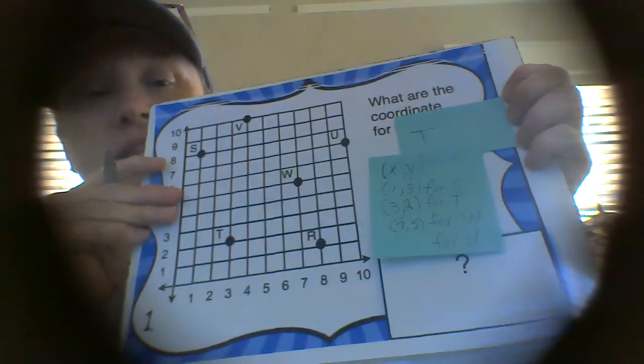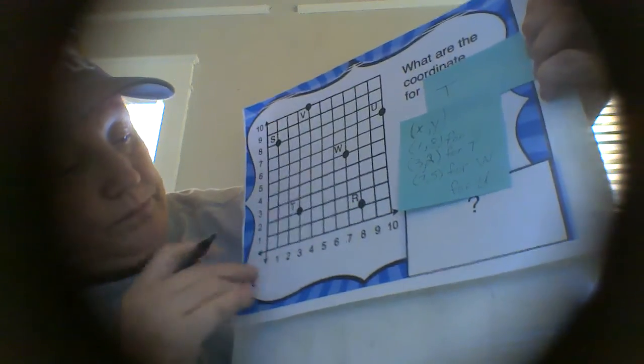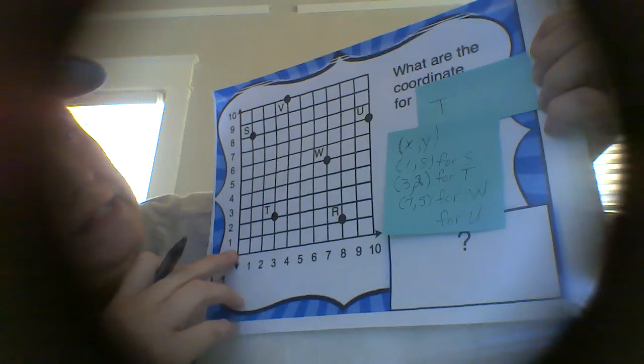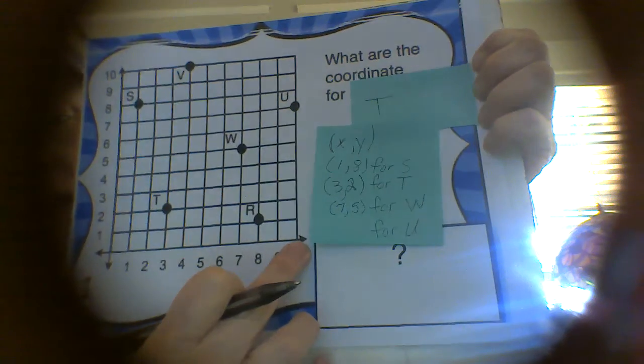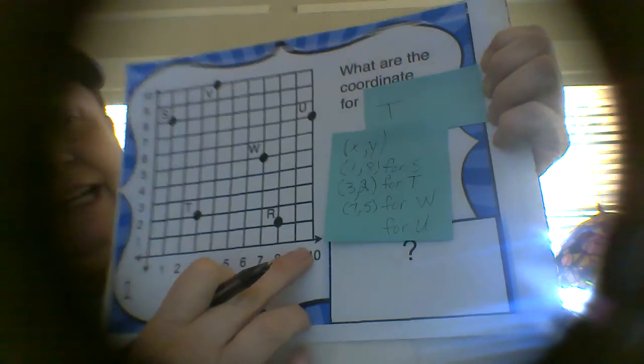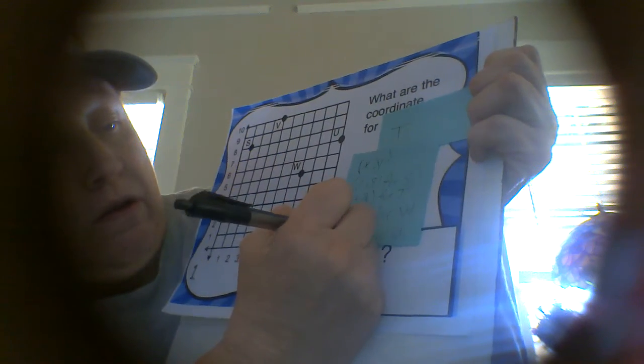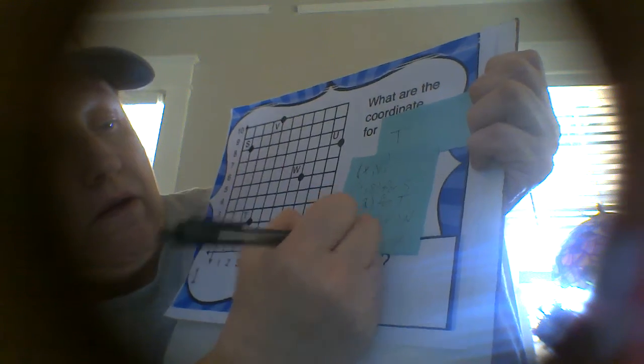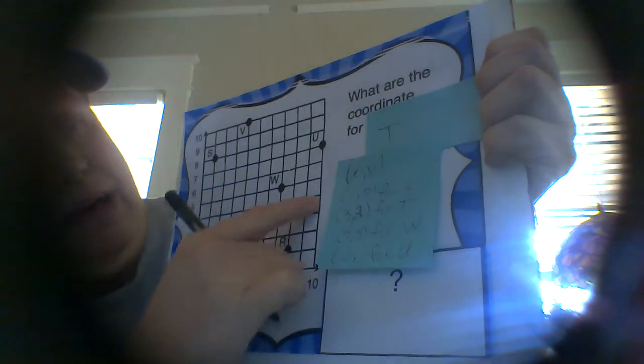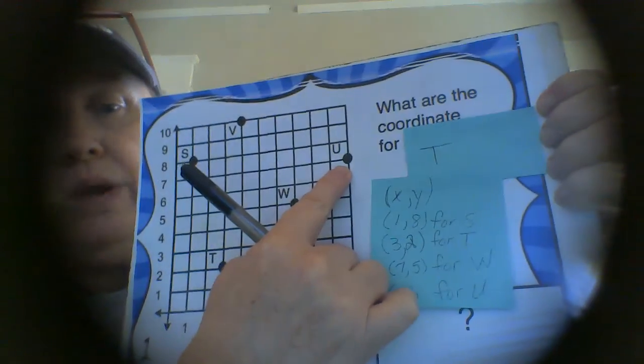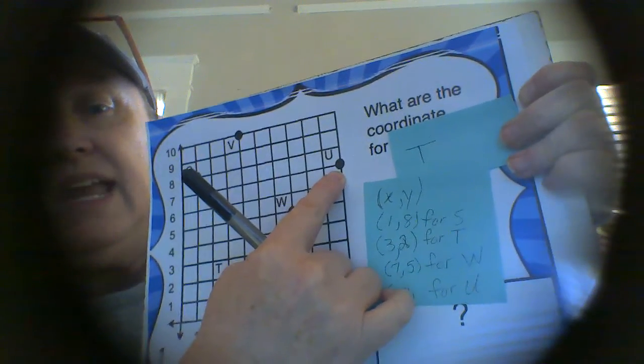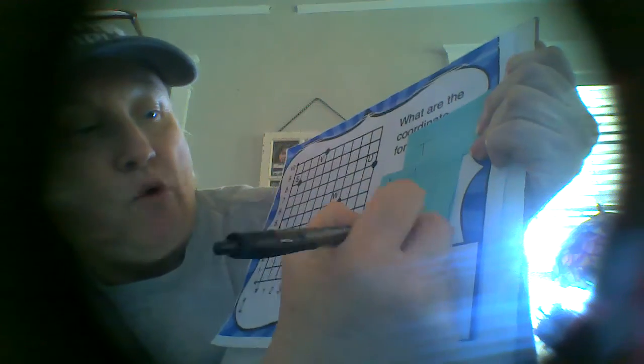Now let's look at U. Going across, we go all the way across to 10. And then going up to our U, we see that number is 7 for the y.